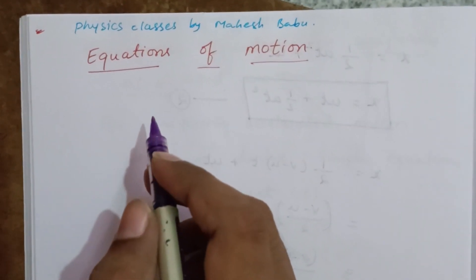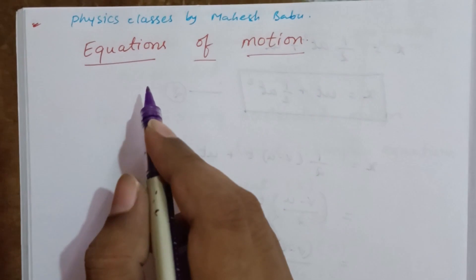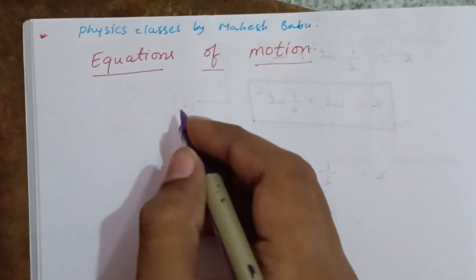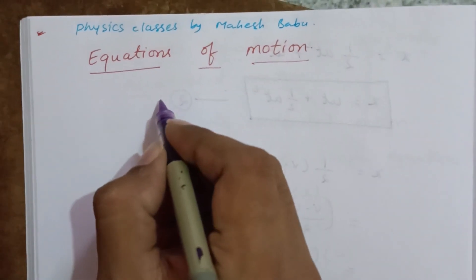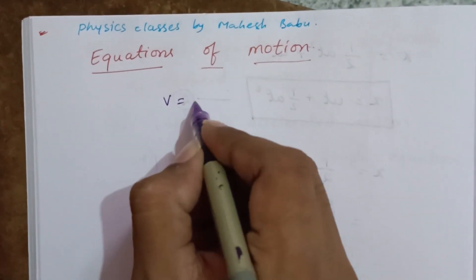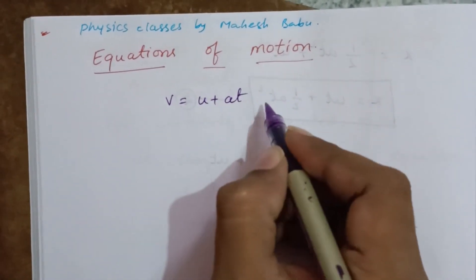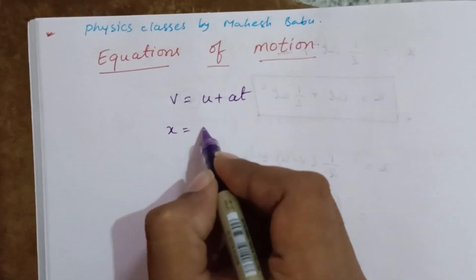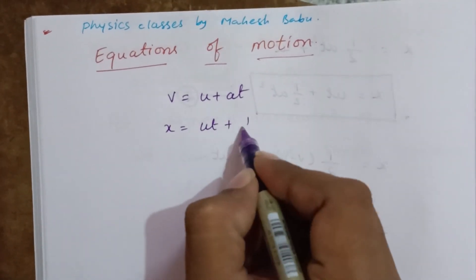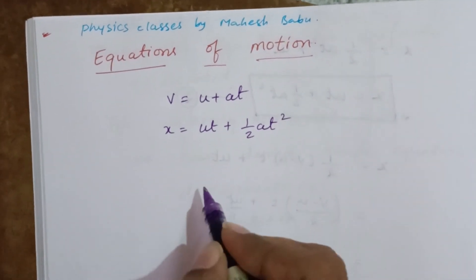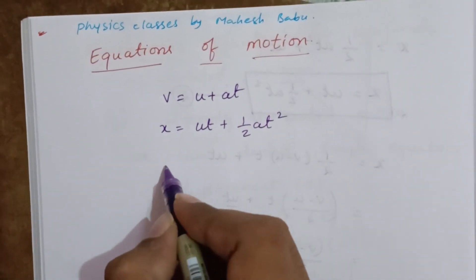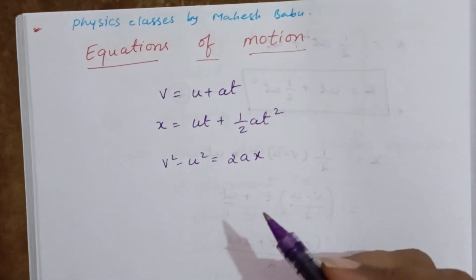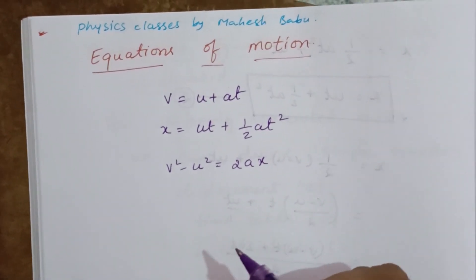In the previous class we discussed about equations of motion using graphical methods. Let's review those equations once again. The first equation is V = U + At. The second is X = Ut + ½At². The third is V² - U² = 2AX. These are the three equations.